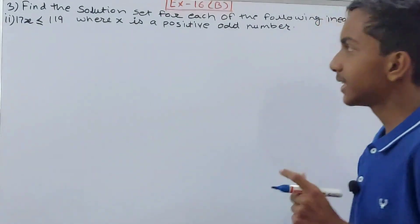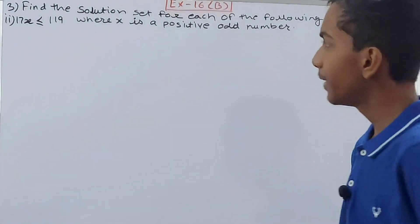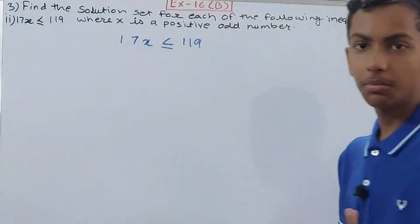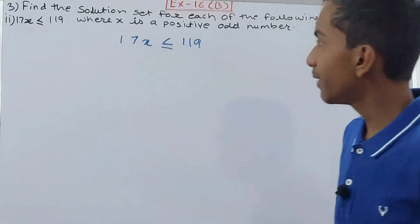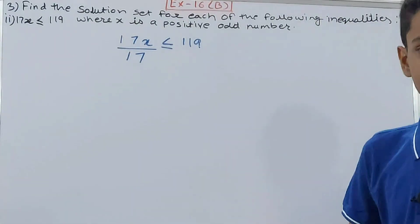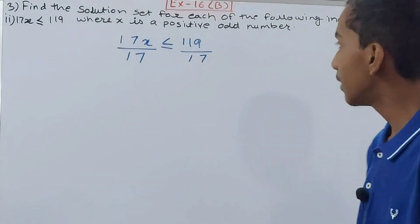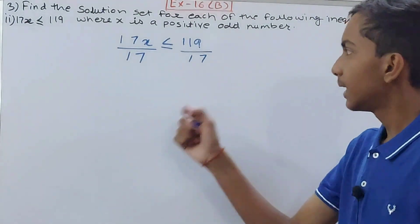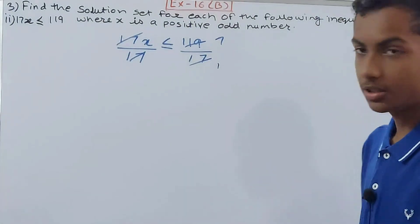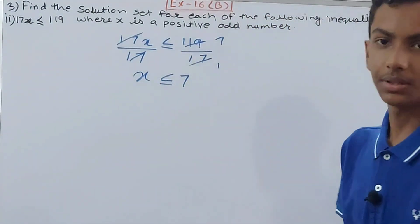Next, we have 17x ≤ 119, where x is a positive odd number. To isolate x, I divide both sides by 17. 17 and 17 cancel on the left, and 119 divided by 17 gives 7 on the right. So x is less than or equal to 7.